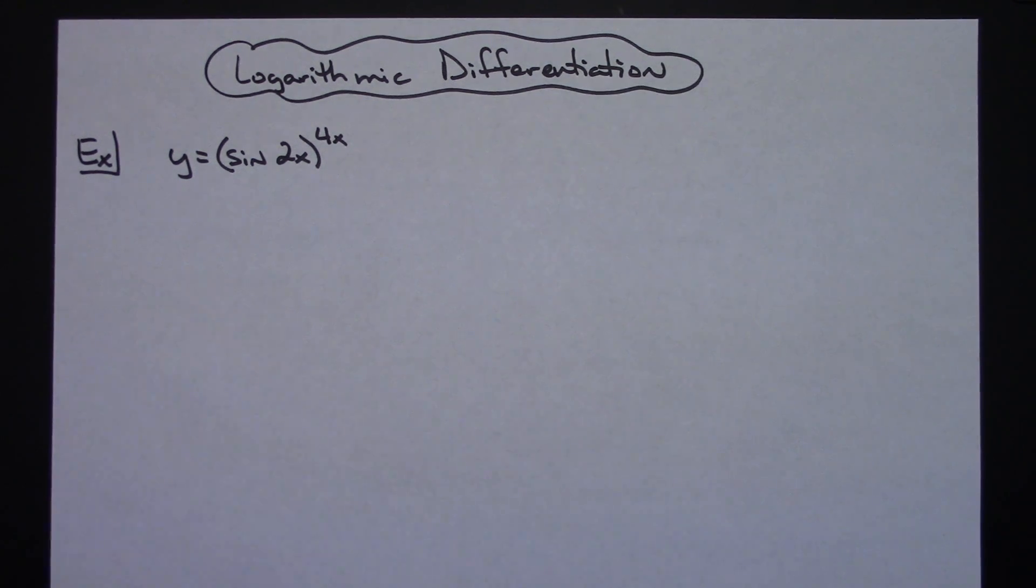So specifically for this one, if we're going to use that method of logarithmic differentiation, we've got our original equation here: y equals sine of 2x raised to the 4x power.